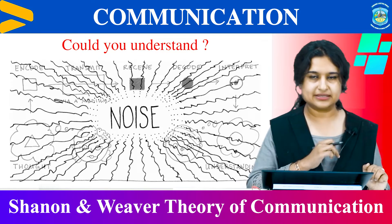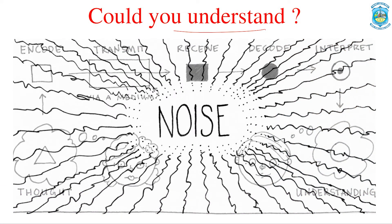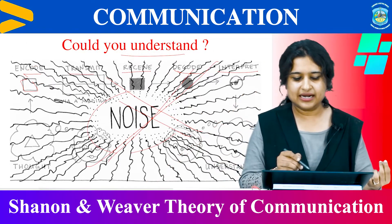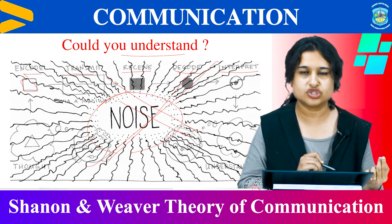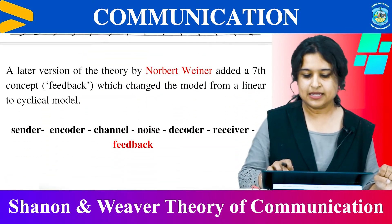Look at this picture and try to understand the next slides. There is noise. You can see some faded images in the background: encode, transmit, receive, decode, interpret. There is a process, but if you have noise in the background, you may not be able to understand any message. I am teaching you, but if there is noise at the back, you won't be able to understand me. This picture is exactly telling you the gist of this entire theory.